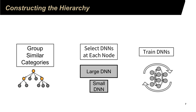The second step is to construct neural networks for each node. We need to consider whether we can use a smaller neural network to achieve the desired accuracy, or whether we need to use a larger, deeper neural network to achieve the desired accuracy.